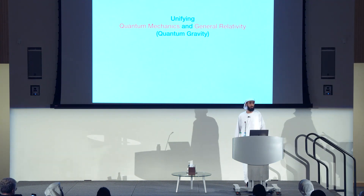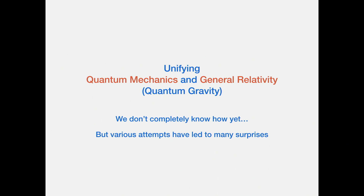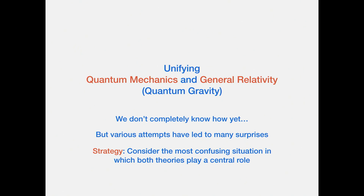The next step is to unify these two great theories, which goes under the name quantum gravity. Spoiler alert: we don't know how to do that yet. But various attempts have led to many surprises. One strategy is to consider the most confusing situation in which both theories play a central role — where they don't really want to work together — and it's in that regime that you might actually be able to make progress.